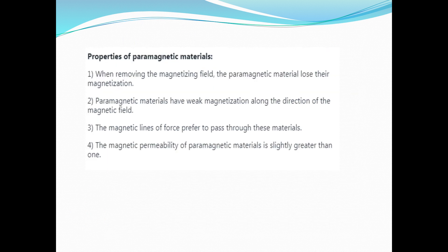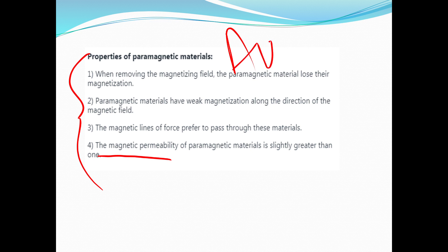Paramagnetic material properties: when we remove the magnetizing field, the paramagnetic material loses its magnetization very quickly. It has weak magnetization. The properties of the magnetic field are very small for paramagnetic materials. What type of material is paramagnetic material?